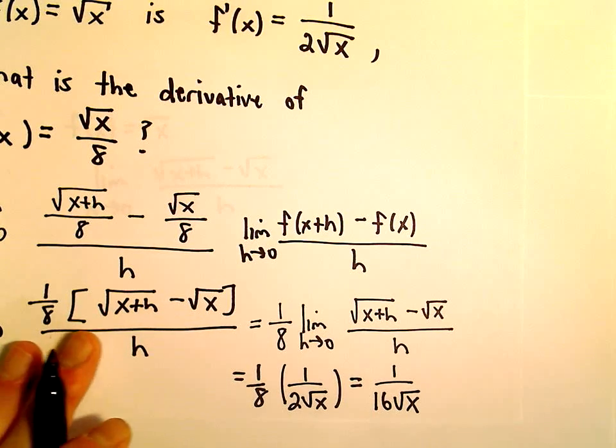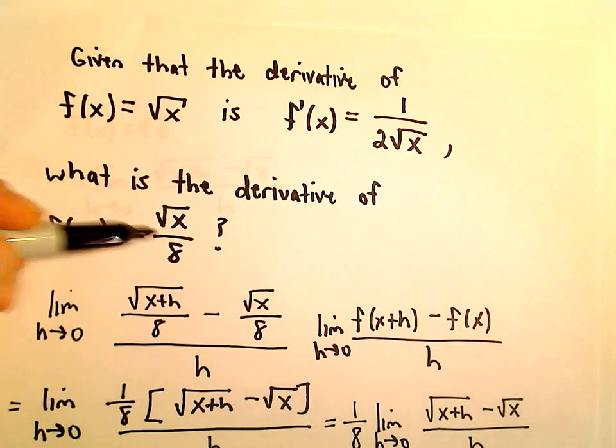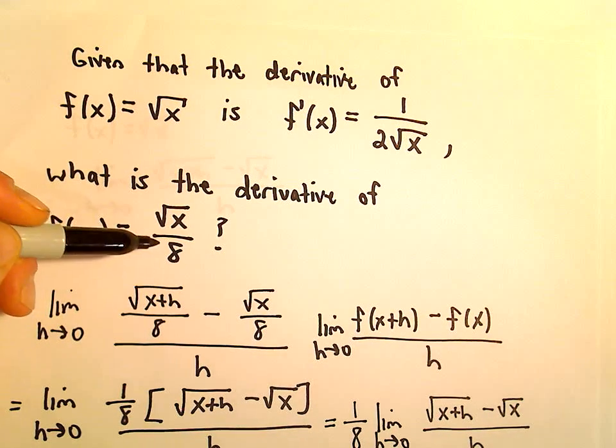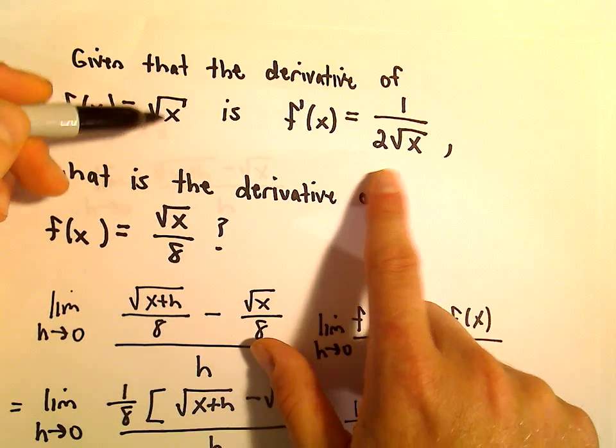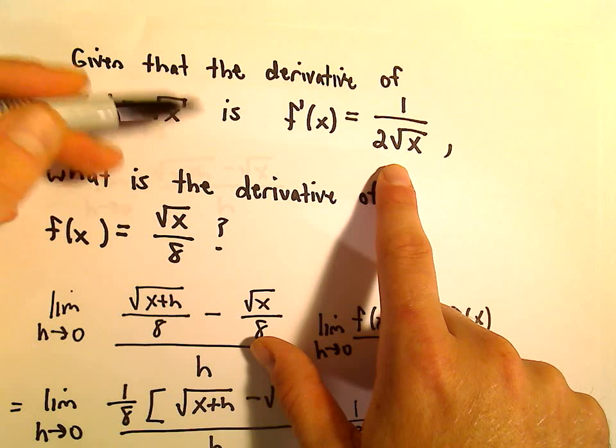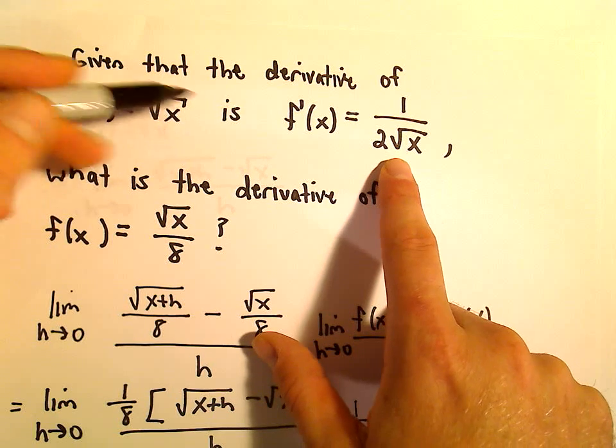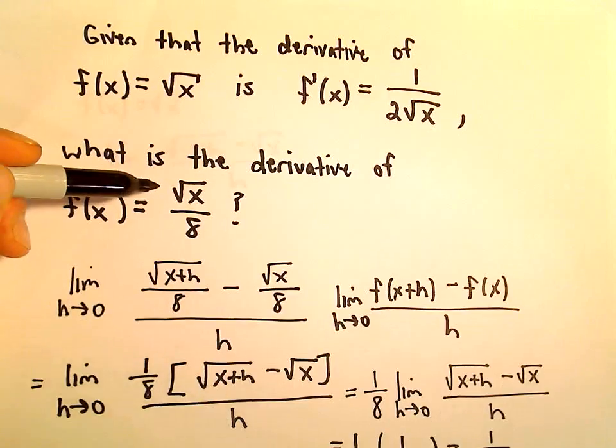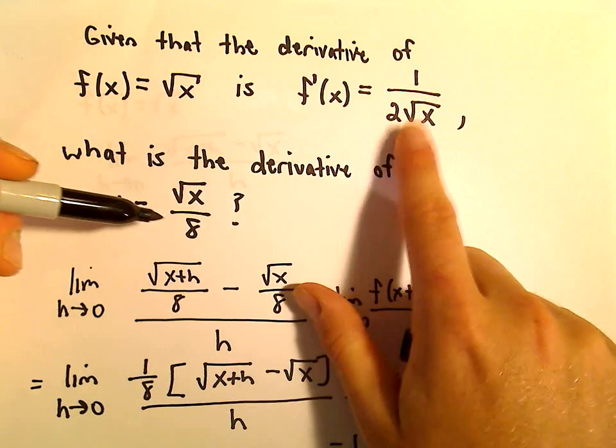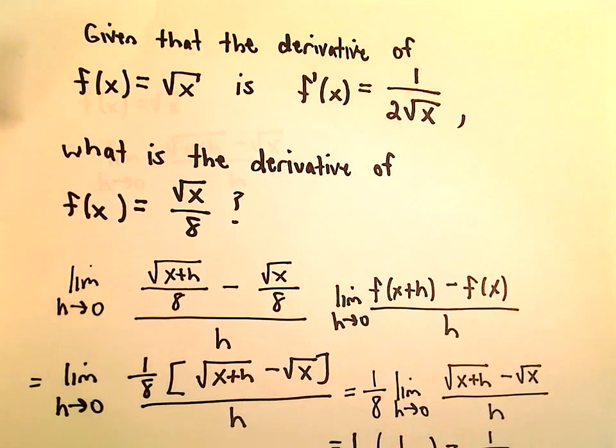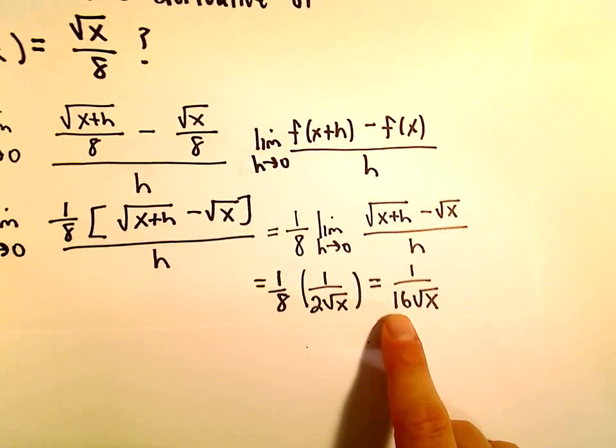So, the moral of the story is, when you're multiplying or dividing by a constant, if you know the derivative of one of them, so in this case, we knew the derivative of square root of x is 1 over 2 root x, it turns out that the derivative of square root of x over 8, we just take the original one and we just multiplied it by 1 eighth. That's all we did in this case.